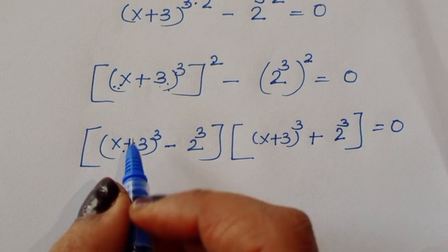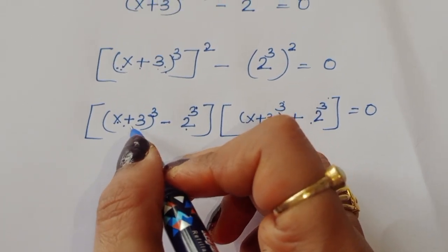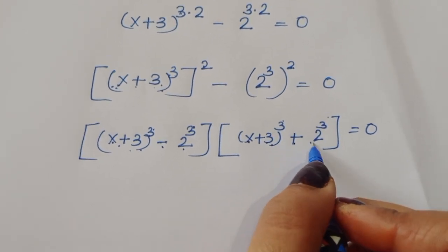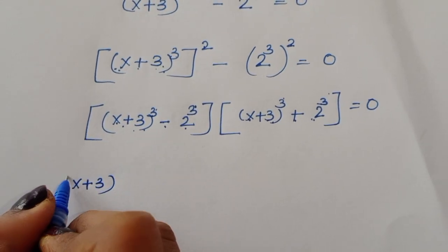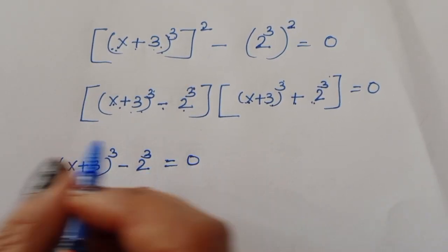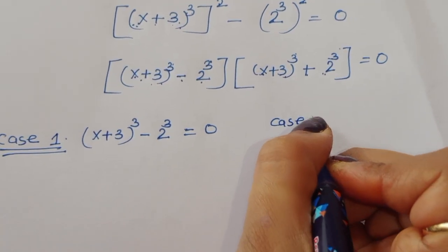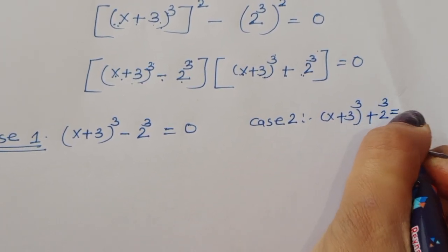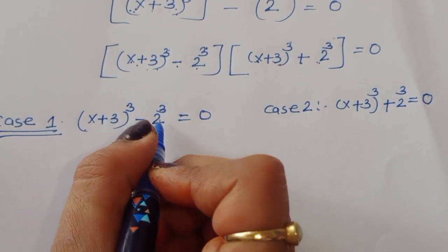Now we can see this gives us a cube minus b cube and a cube plus b cube. So we got two equations. The first one is (x+3)^3 minus 2^3 equals 0, and the next one is (x+3)^3 plus 2^3 equals 0. Now taking Case 1: (x+3)^3 minus 2^3 equals 0.